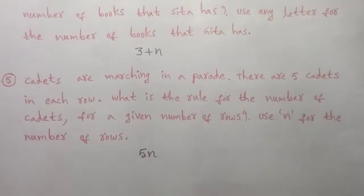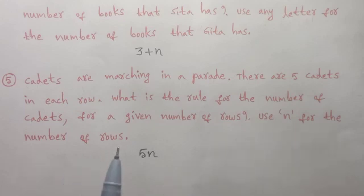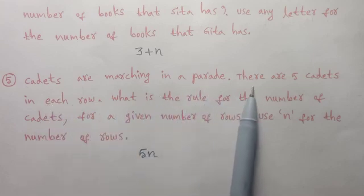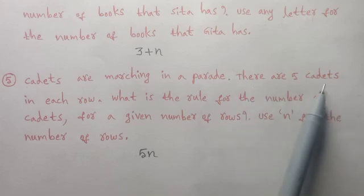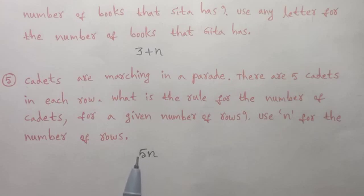Coming to the last problem of this exercise: Cadets are marching in a parade. There are 5 cadets in each row. What is the rule for the number of cadets for a given number of rows? Use n for the number of rows. Each row has 5 cadets, so the rule is 5 into n.